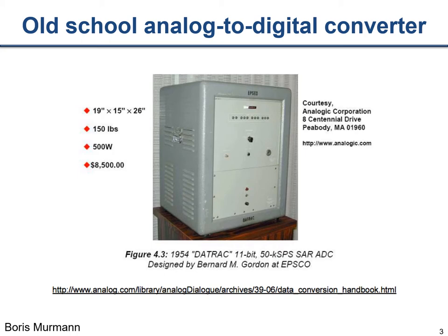This is a picture of an analog to digital converter that was built in 1954. As you can see, it fits on a large bench, it's 150 pounds, it consumes 500 watts. It cost a considerable amount of money back then, but it's actually a fairly high performance ADC - 11 bits, 50 kilo samples per second - and it's based on the successive approximation register architecture, which we will talk about later in this lecture.